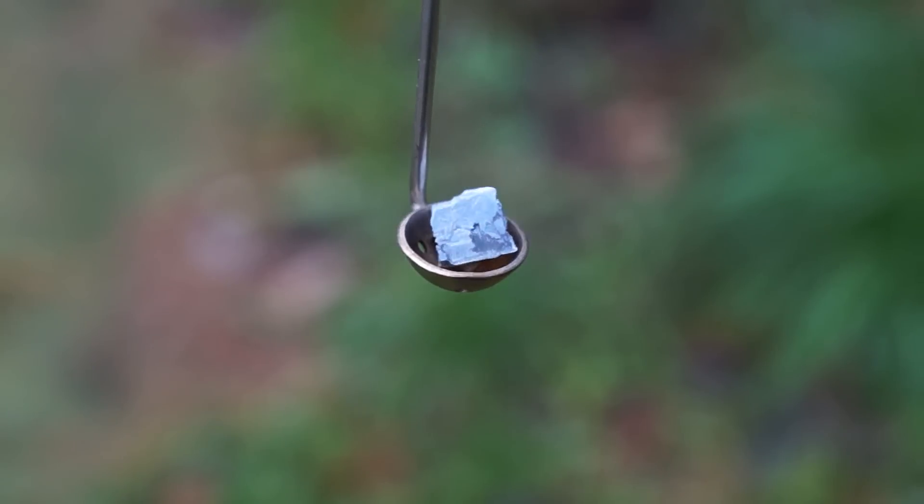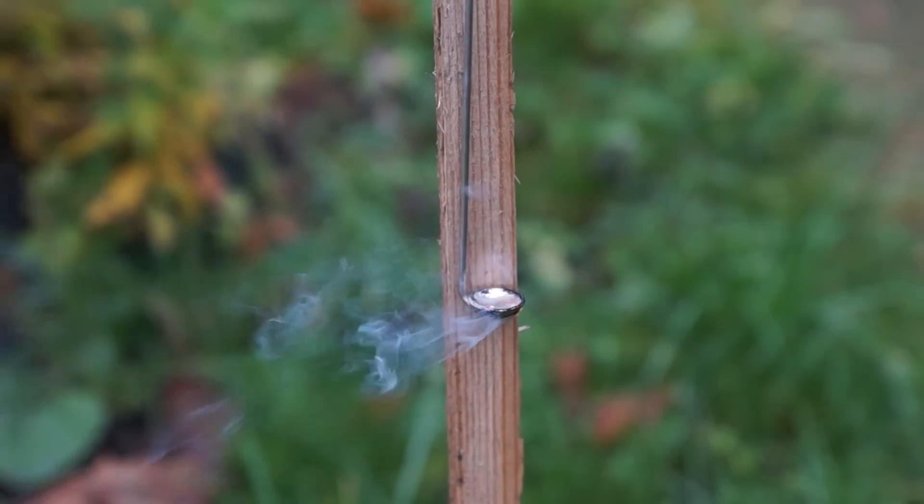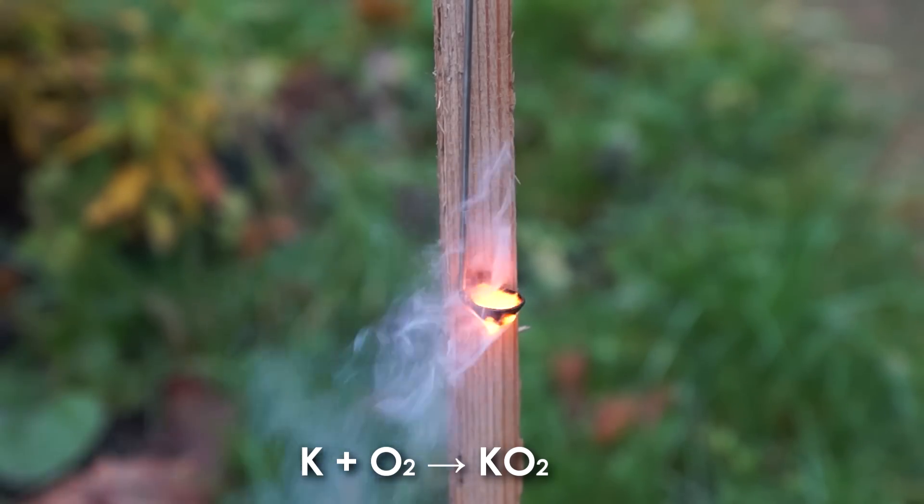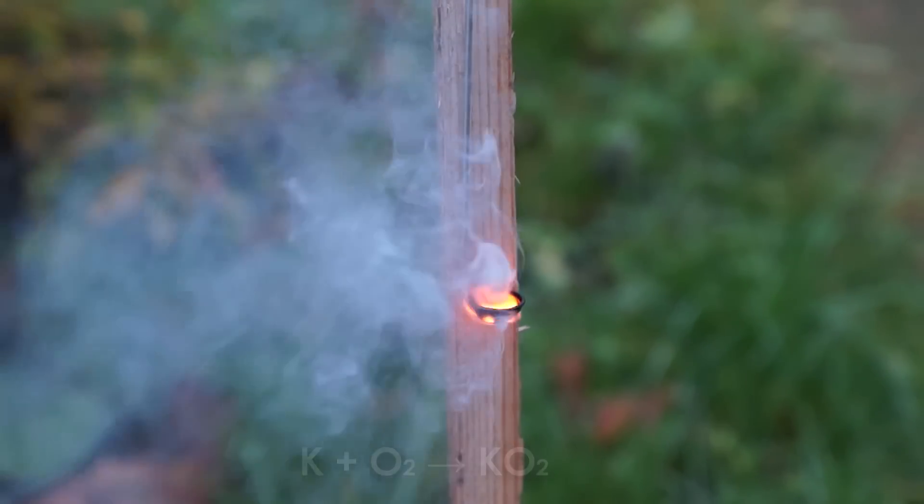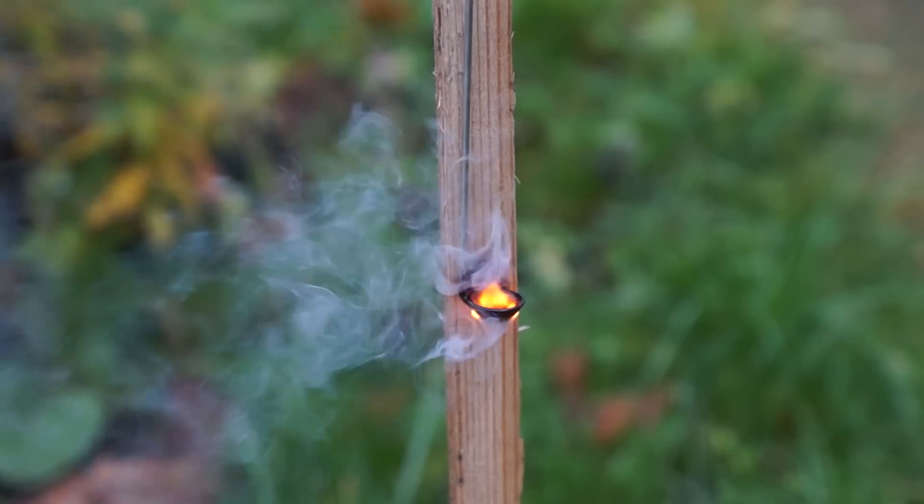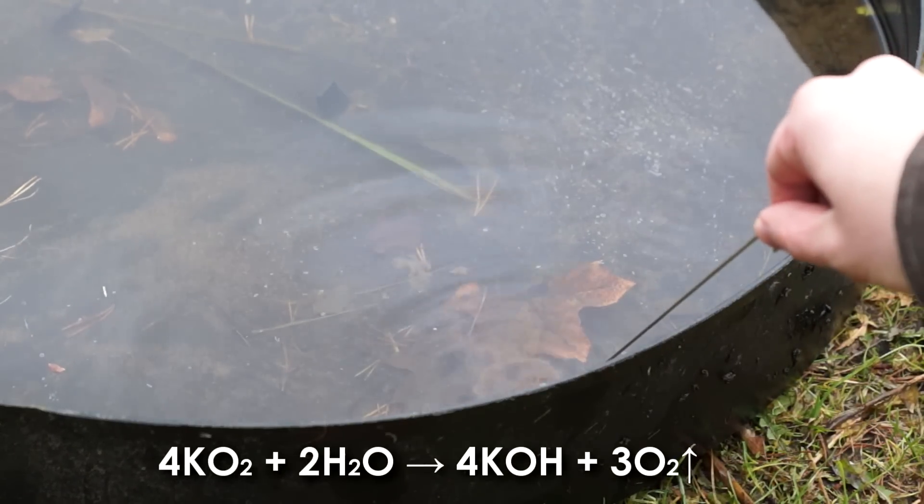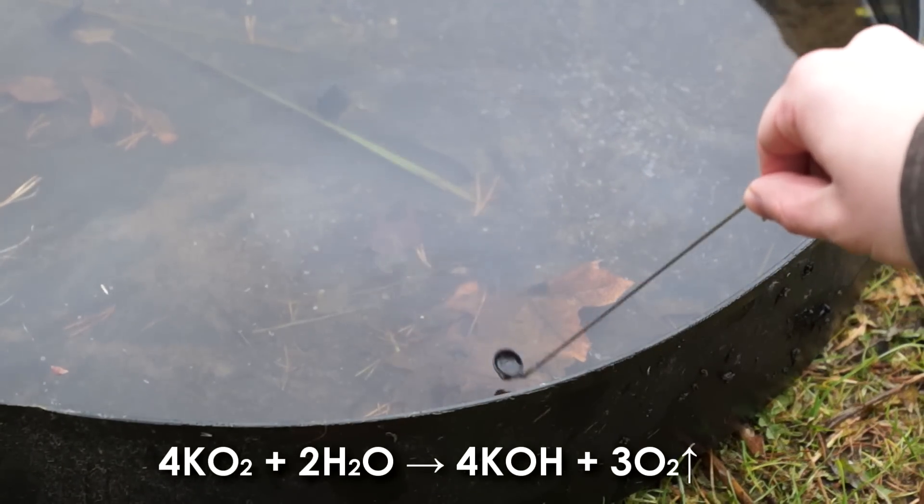Potassium can be set on fire. It will burn and form potassium superoxide. If potassium superoxide is dipped in water, it will begin to decompose.